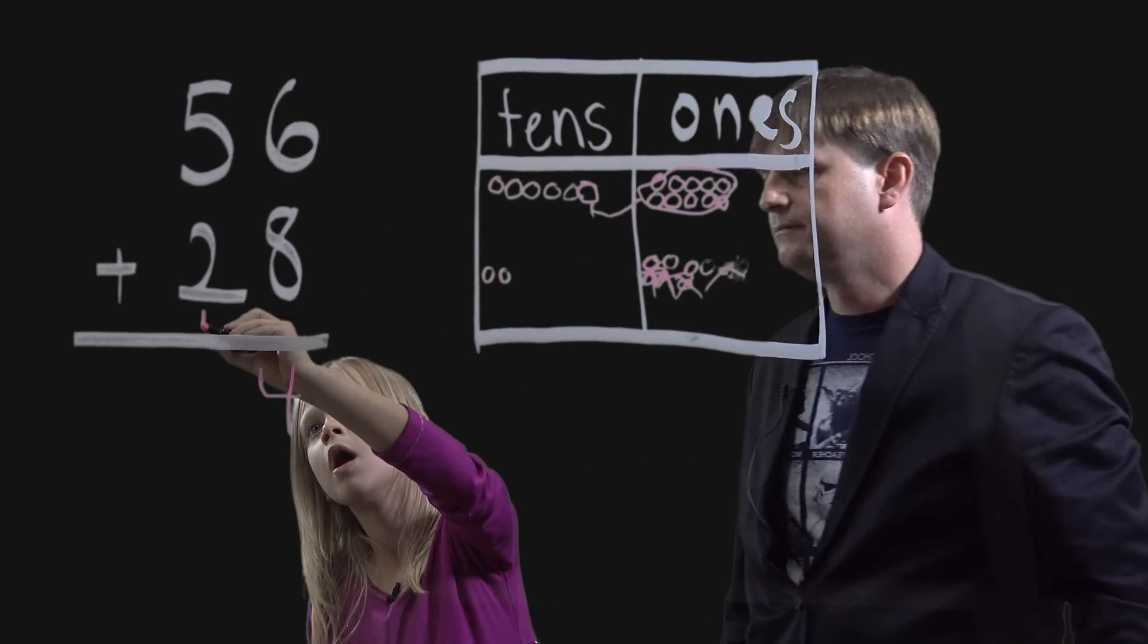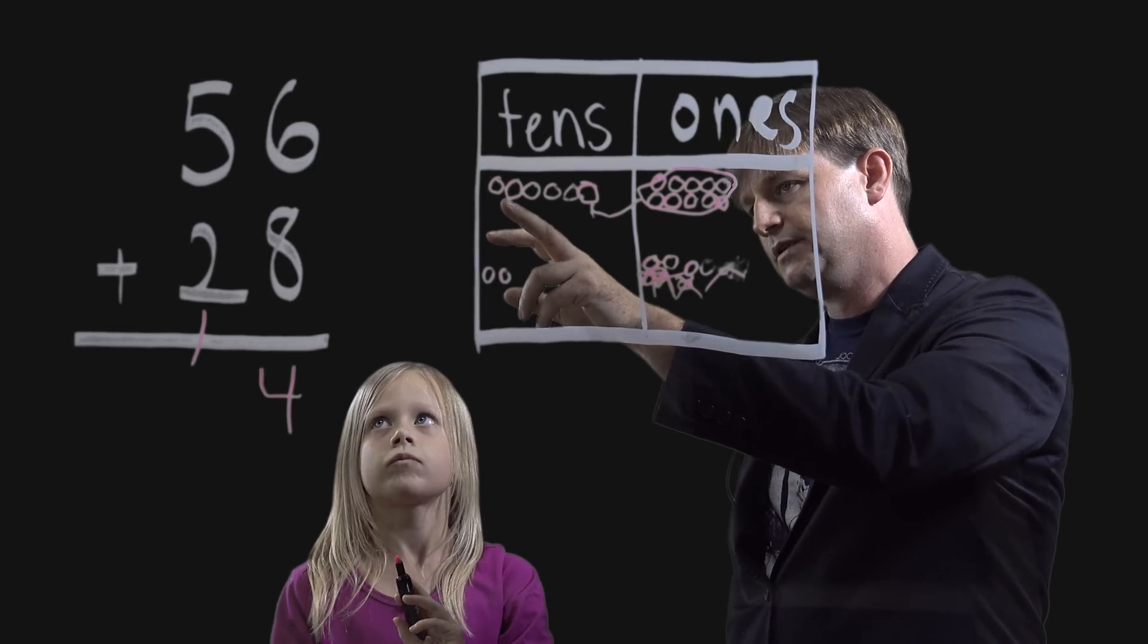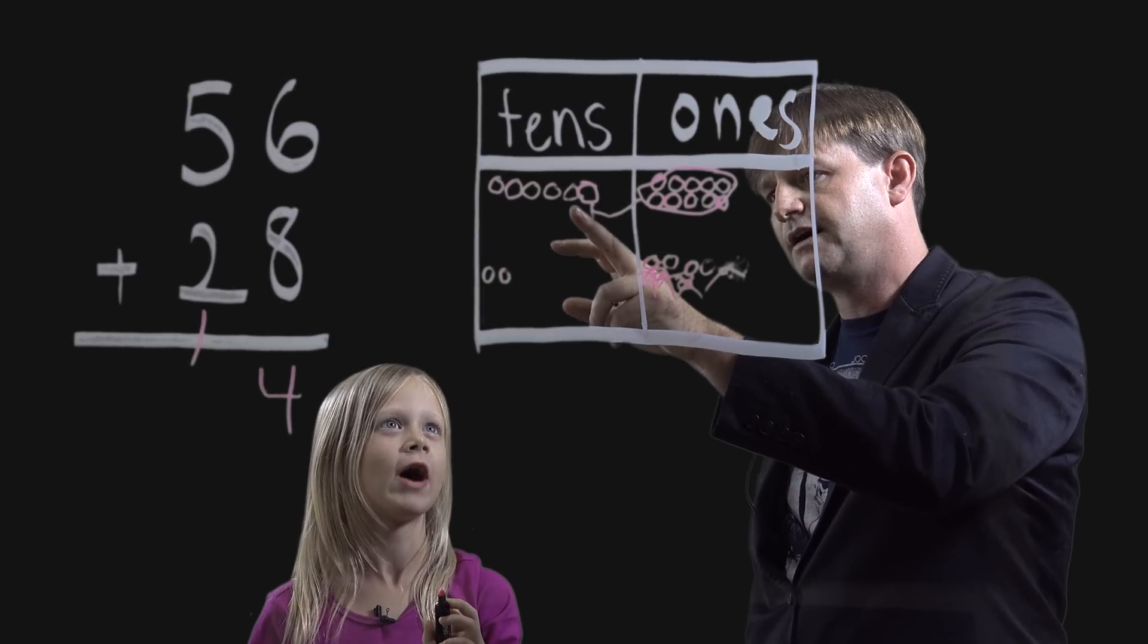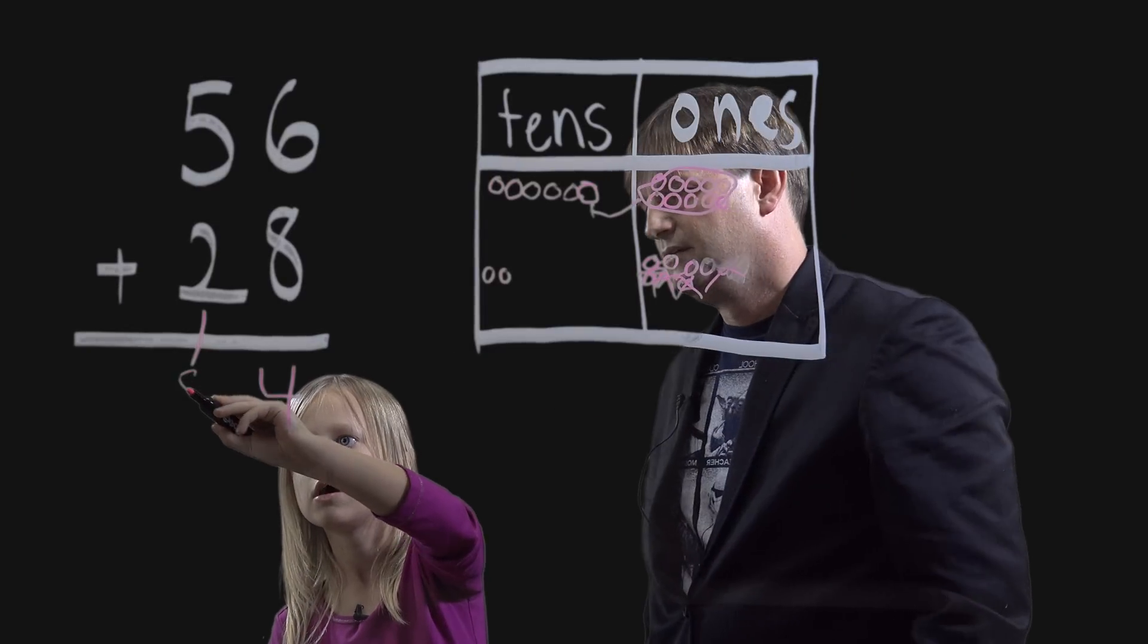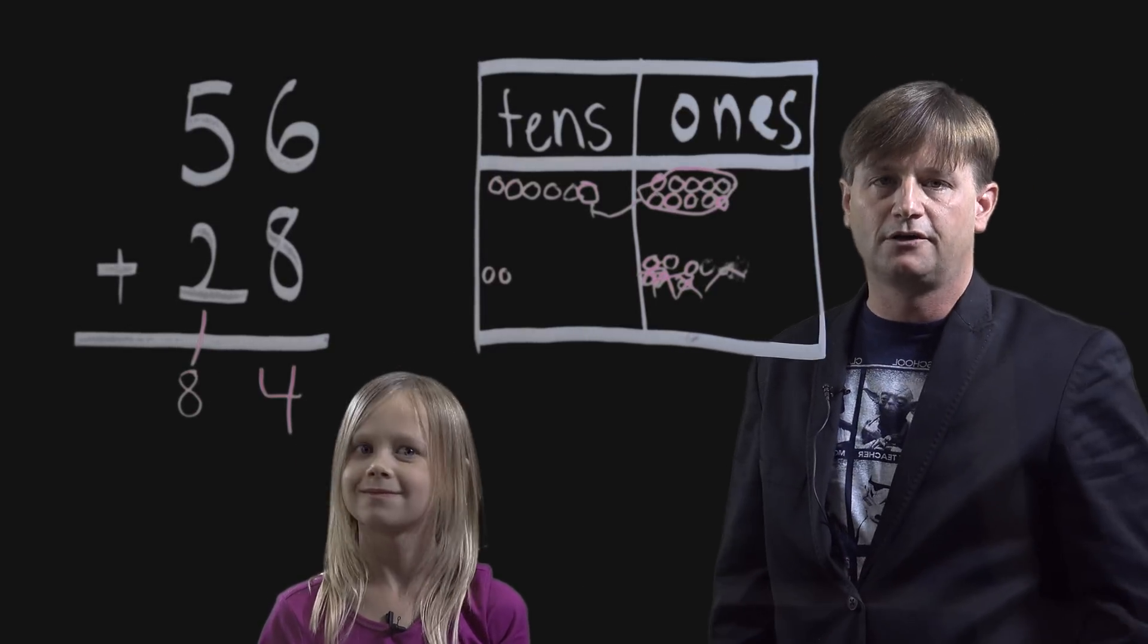And then how many tens do we have? Count them. 1 ten, 2 tens, 3 tens, 4 tens, 5 tens, 6 tens, 7 tens, 8 tens. And that's how the addition algorithm works using just two digit numbers.